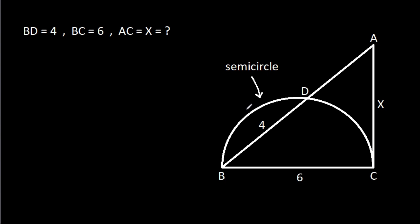In this video, we have been given a semicircle in which BD is 4, BC is 6, and AC is X. We have to find X.